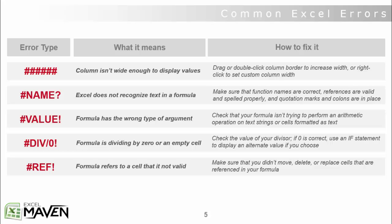The next error type is the NAME error, which means that Excel doesn't recognize text in a formula. This can happen if you type your function name wrong, if you mistyped a reference, or if you missed quotation marks or colons. Nine out of ten times that I get a NAME error, it's because I didn't surround a text string within a formula with the proper quotation marks, or I left out a parenthesis or a comma somewhere in my formula.